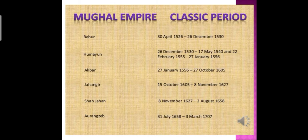This is the classical period of the Mughals, which was started by Babur, then his son Humayun, who was succeeded by Akbar, then Jahangir. Jahangir's son, who was named Shah Jahan, took the throne, and in the end the throne came to Aurangzeb.